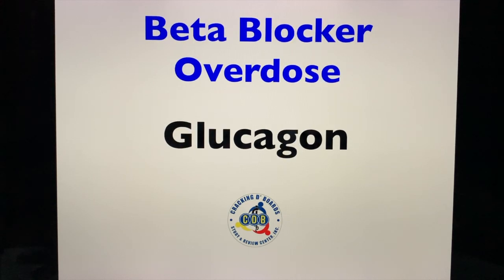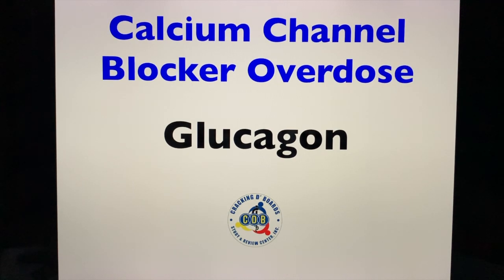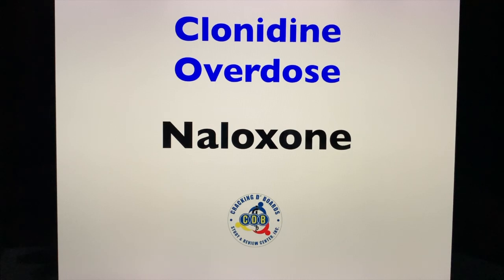What about an overdose with beta blockers? The drug of choice or the antidote is glucagon. What about calcium channel blocker overdose? The antidote is also glucagon. What about an overdose with clonidine — the centrally acting antihypertensive? You give naloxone.